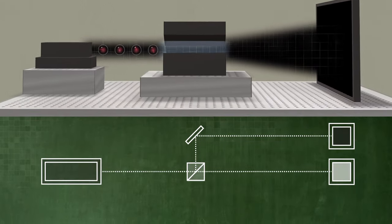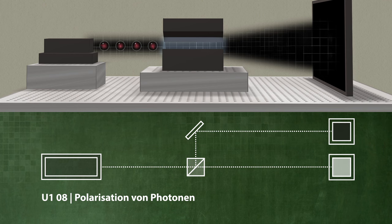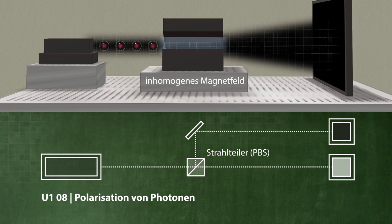In fact, there is a close connection between this experiment with a single electron spin and the experiment with single polarized photons. Here, the polarizing filter corresponds to the inhomogeneous magnetic field.